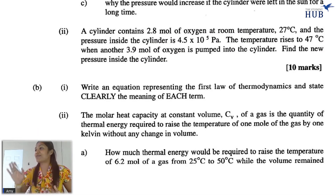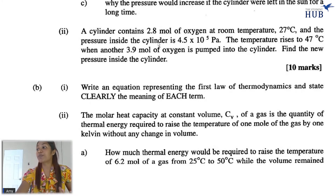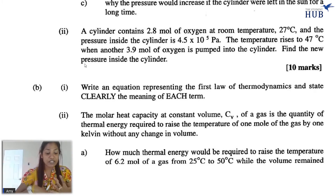The next part of the question deals with a numerical problem. A cylinder contains 2.8 moles of oxygen at room temperature, 27 degrees Celsius, and the pressure inside the cylinder is 4.5×10⁵ Pascals. The temperature rises to 47 degrees Celsius when another 3.9 moles of oxygen is pumped into the cylinder. Find the new pressure inside the cylinder. In physics, we have different gas laws: Charles' law, Boyle's law, the pressure law, and the ideal gas law.